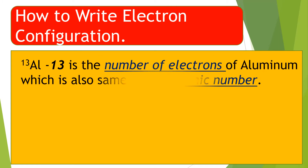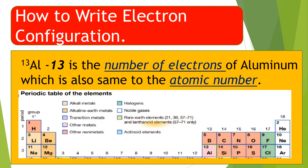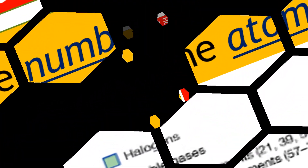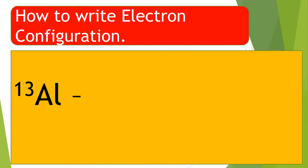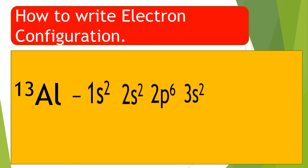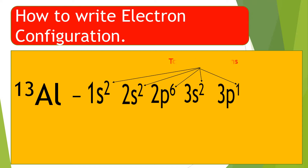How to write electron configuration. Example: aluminum with atomic number of 13, and the same number of electrons. The electron configuration of aluminum is: 1s2, 2s2, 2p6, 3s2, 3p1 — a total of 13 electrons.